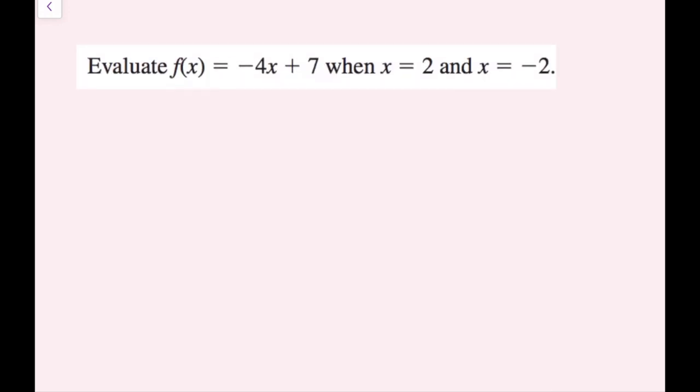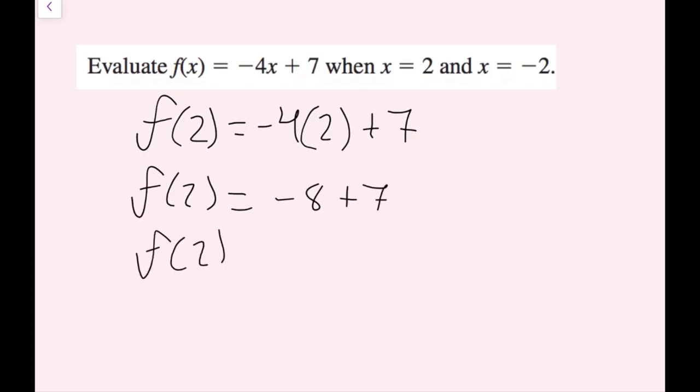In this example, we're going to evaluate f of x equals negative 4x plus 7 when x equals 2 and x equals negative 2. So what that means is we just want to plug 2 and then negative 2 in for the x here. So the way we would write this is f of 2 equals negative 4, and then anytime we see an x in our function, we plug in a 2 for it. So I just substituted my 2 and now I just simplify. So f of 2 equals negative 8 plus 7, and f of 2 is going to simplify down to negative 1.